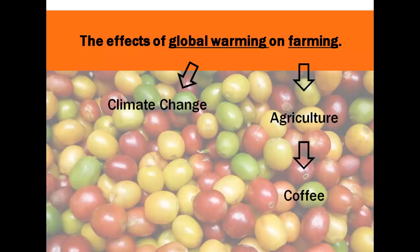Maybe while you're doing your online search on global warming and agriculture, you find articles that interest you about global warming's effect on coffee growing. This would be another way to narrow your topic even further.